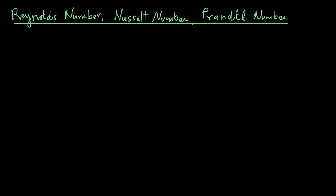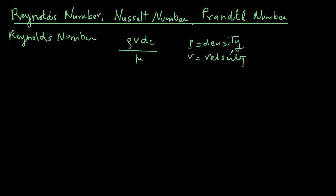These numbers are Reynolds number, Nusselt number, and Prandtl number. Let's examine each number separately. You may recall from the study of fluid flow that Reynolds number is expressed as rho times v times dc divided by mu, where rho is the density, v is the velocity, dc is the characteristic dimension, and mu is the viscosity.